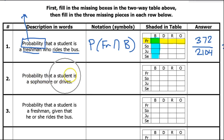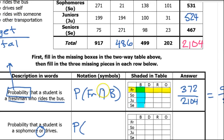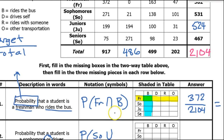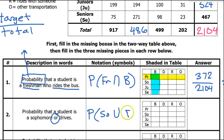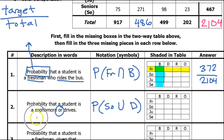Moving on: the probability that a student is a sophomore or drives. This time they were kind enough to literally give us the word 'or' to make it obvious. So this is the AND symbol, and the OR symbol looks like this. A student that is a sophomore — that's SO — or drives.